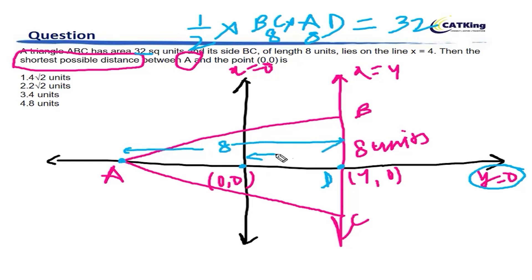This distance is 4, so the distance from A to 0,0 will also be 4 units. I hope this is clear to you.